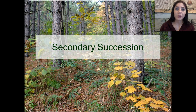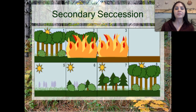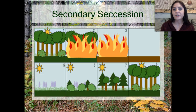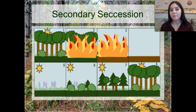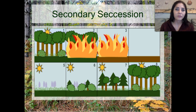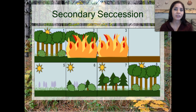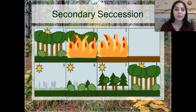Secondary succession begins after some type of either natural or man-made disaster, and we are left with a layer of soil — unlike primary succession, when there is no layer of soil.